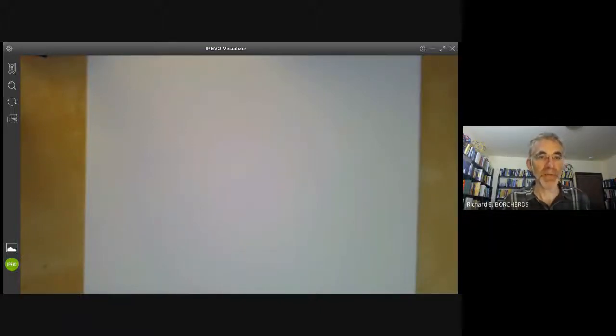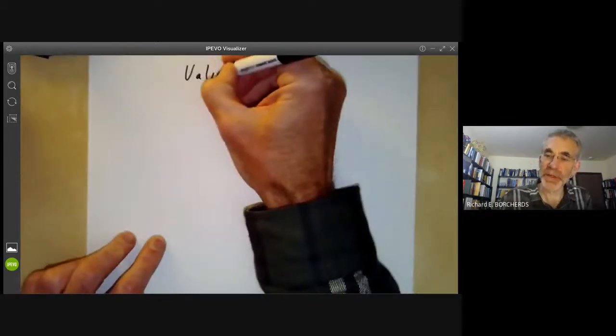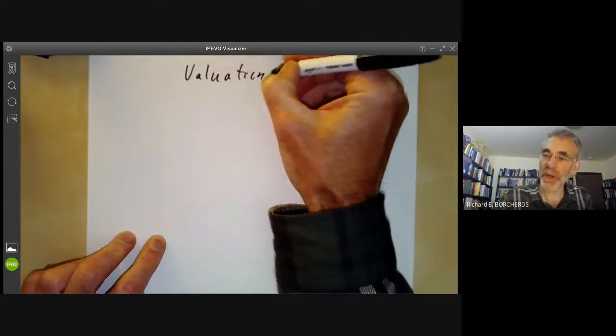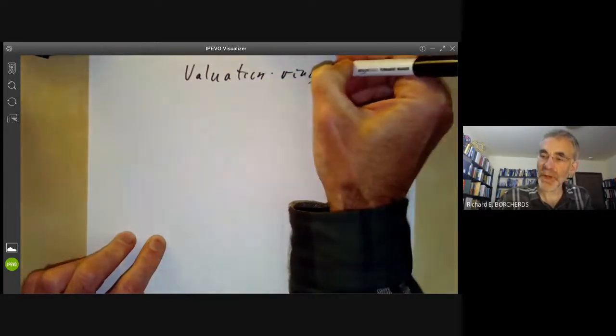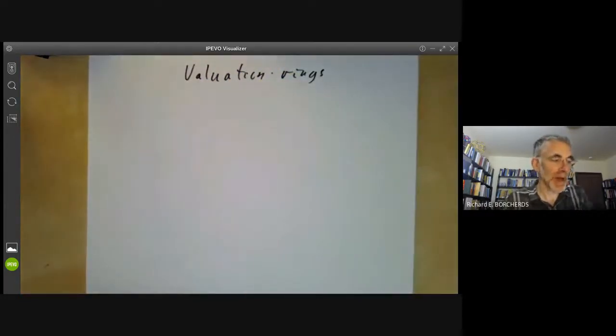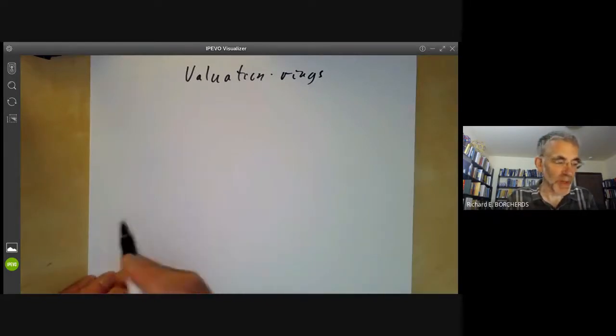This lecture is part of an online algebraic geometry course on schemes and will be a review of valuation rings, which we will be using when we describe various criteria for maps to be separable or proper later on.